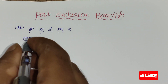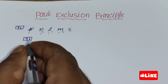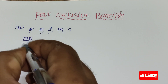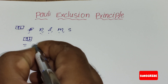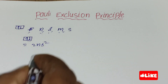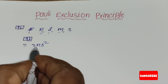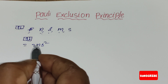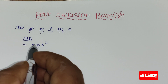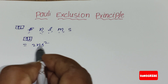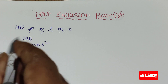The maximum number of electrons that can be accommodated in any shell is given by the formula 2n², where n is the principal quantum number. The capacity of any sublevel is determined on the basis of the Pauli's Exclusion Principle.